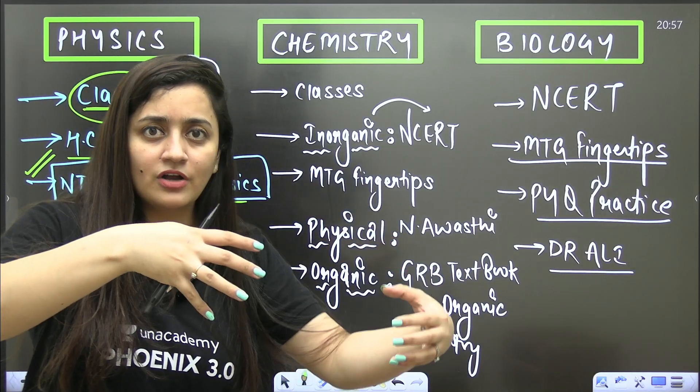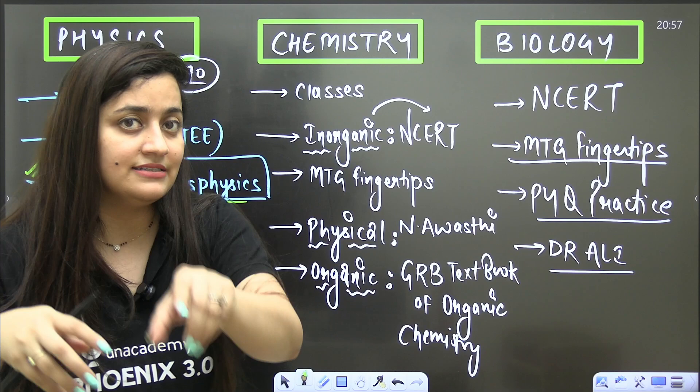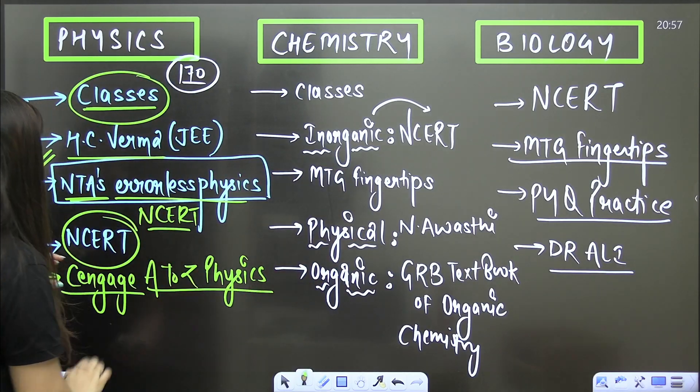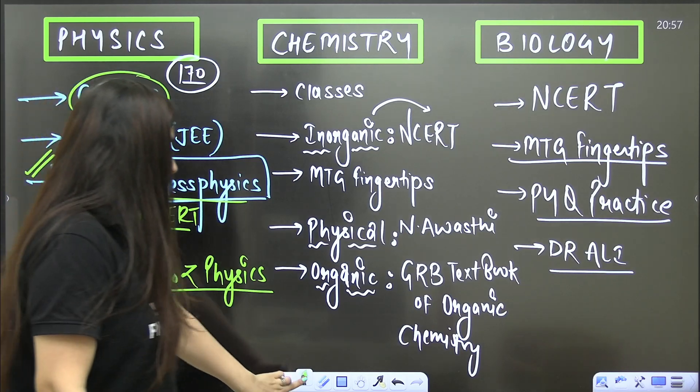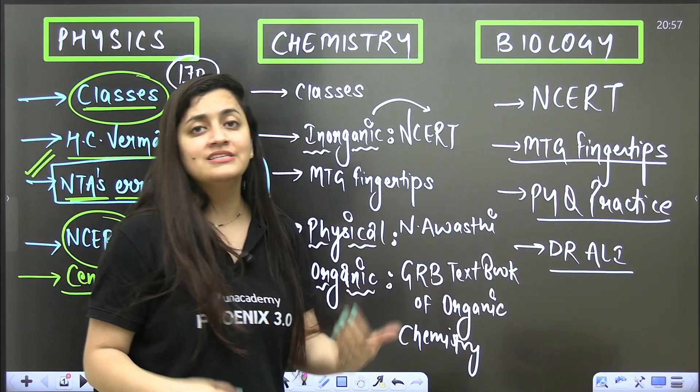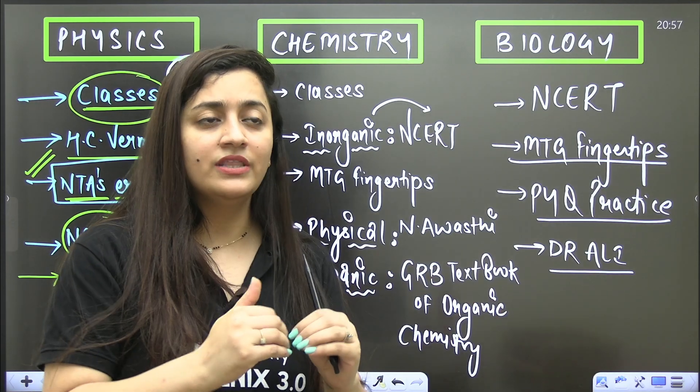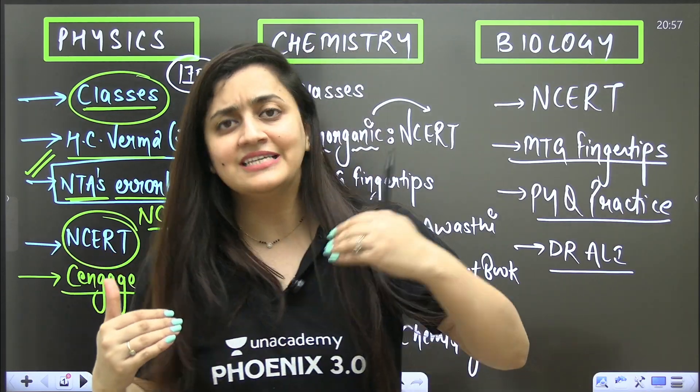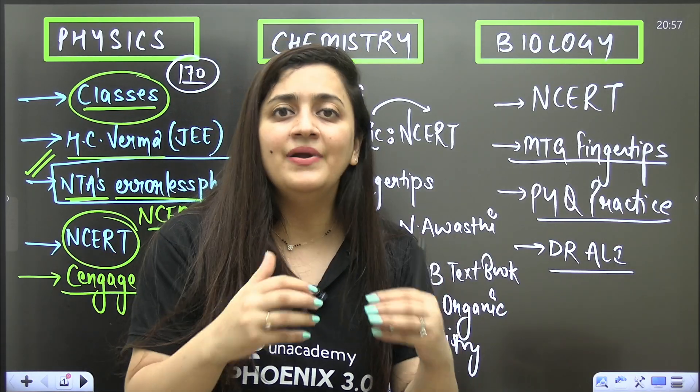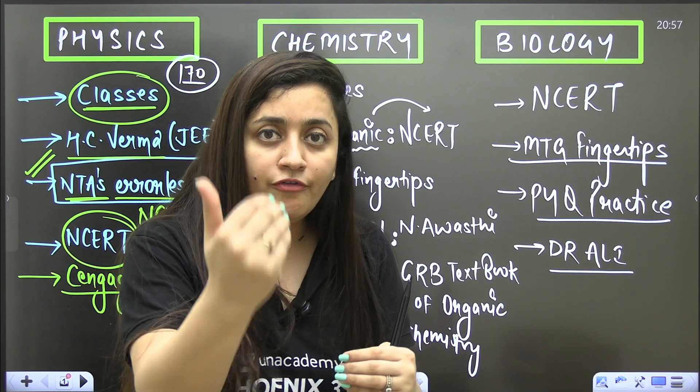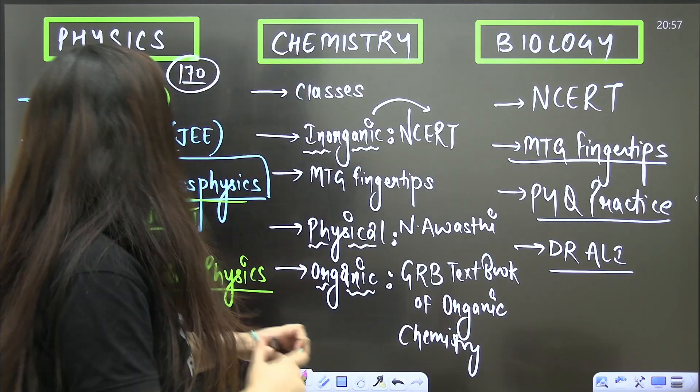One more book is there, that is Cengage's A to Z Physics. Here in this book the level is really good. If you really want to master any topic, you're done with your NTA's Errorless Physics, then you can definitely go for the Cengage's A to Z Physics.